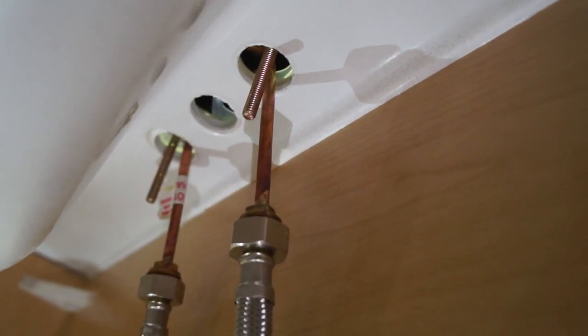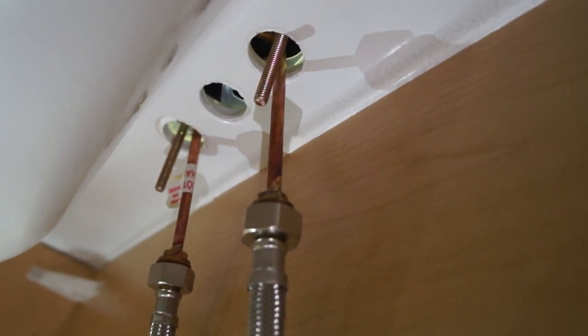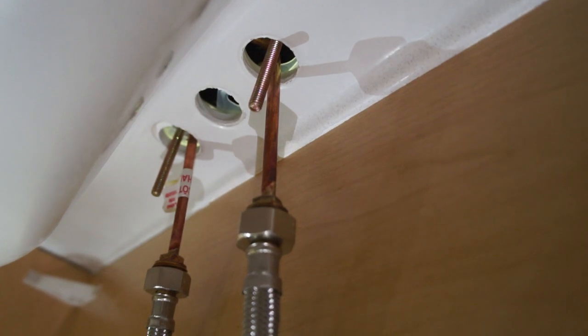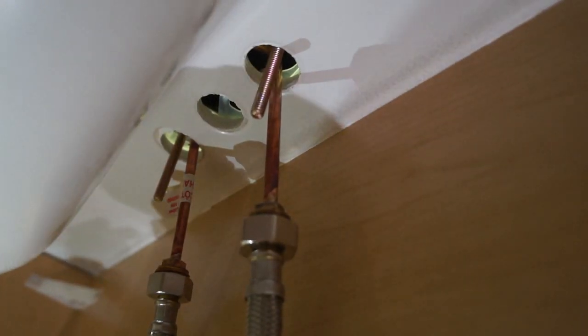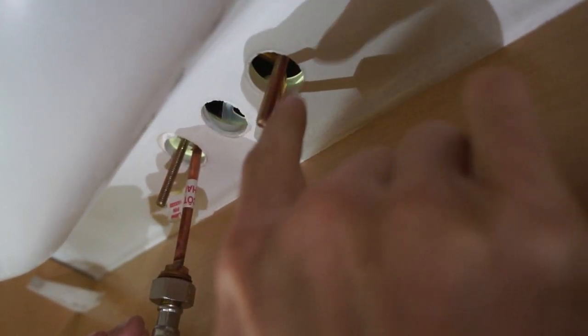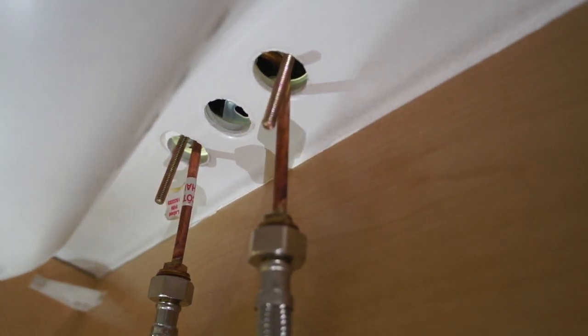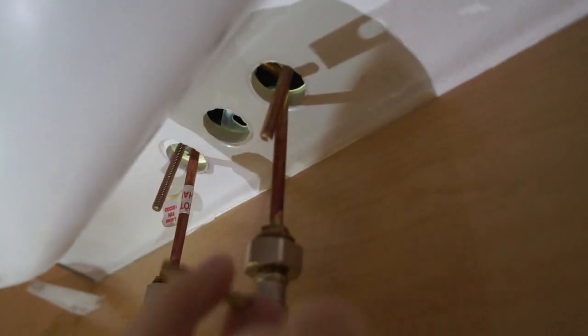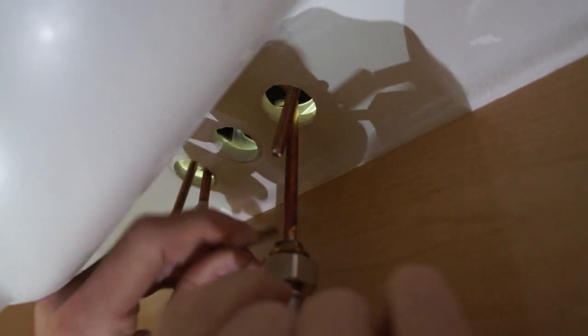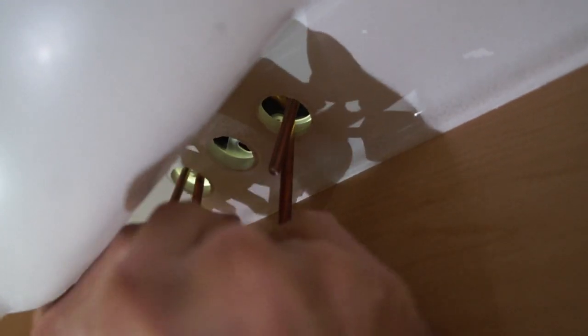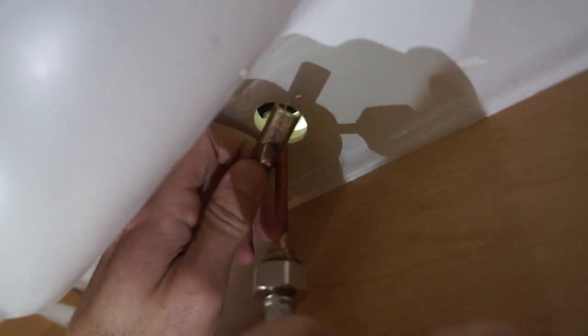All right, we're underneath the sink now, and we're going to try to show you this the best we can. It's a little tight on the space. You've got the bolts that come down through, and like I said, you're going to put the flat nut piece on first, and then the long tube piece goes on, so you don't have to screw on.